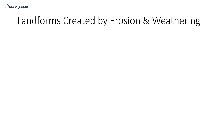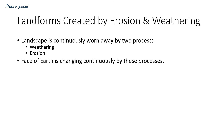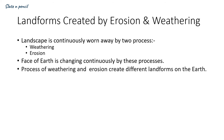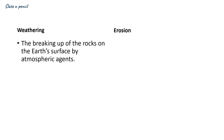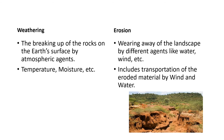Now we will discuss landforms created by erosion and weathering. Landscapes are continuously worn away by two processes: weathering and erosion. Weathering is the breakdown of rocks on the Earth's surface by atmospheric agents such as temperature and moisture. Erosion is the wearing away of the landscape by different agents like water and wind, including the transportation of eroded material.